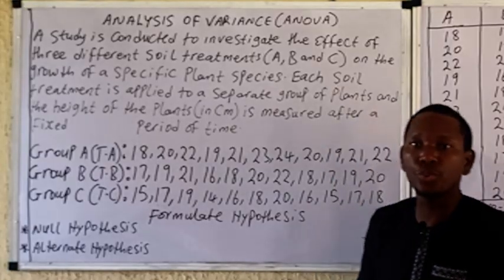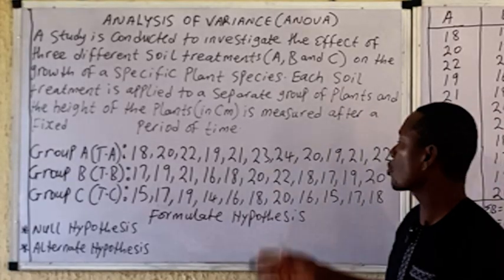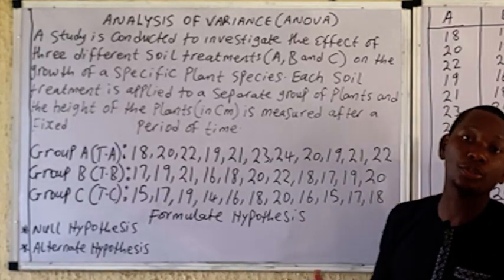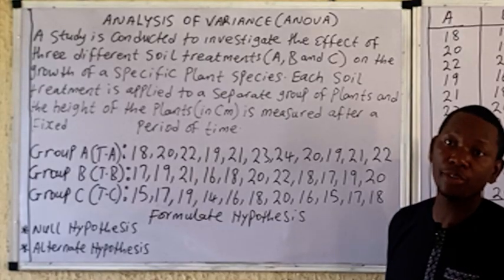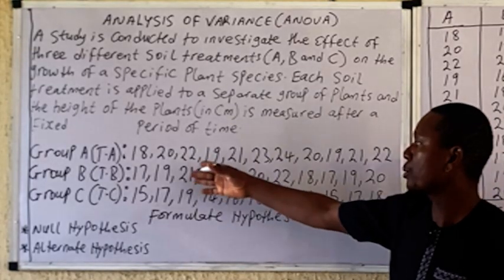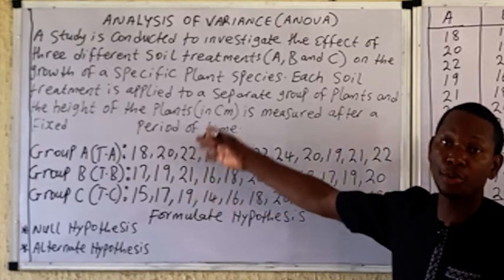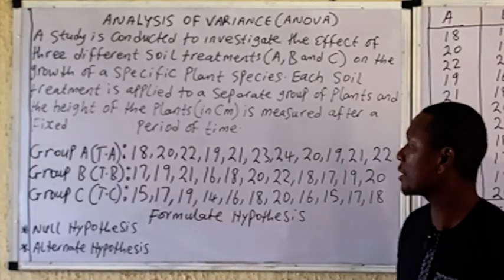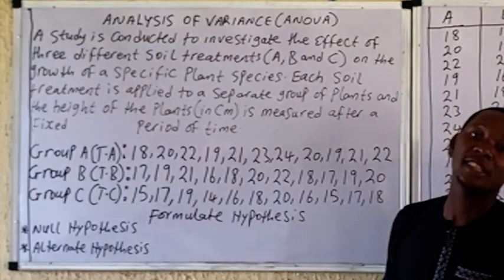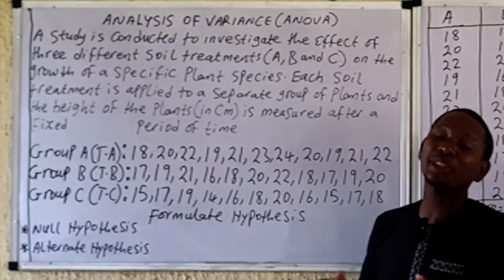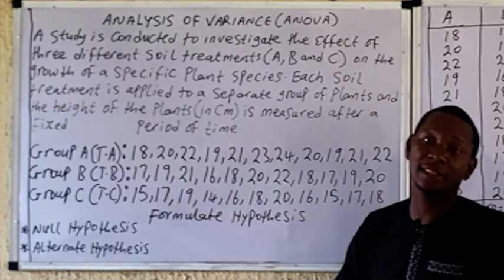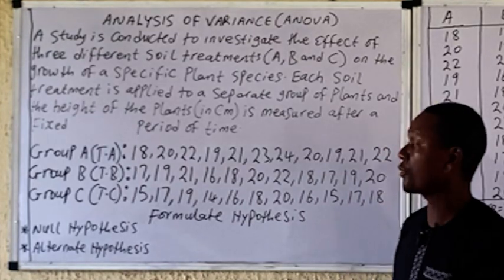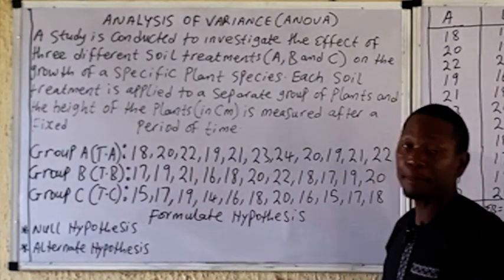The first thing you do is formulate your hypothesis. The null hypothesis states that there is no significant difference between Treatment A, Treatment B, and Treatment C. The alternate hypothesis states that there is a significant difference in at least one of the means between Treatments A, B, and C — it may even be more than one.